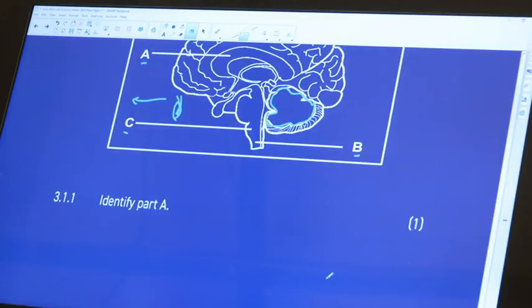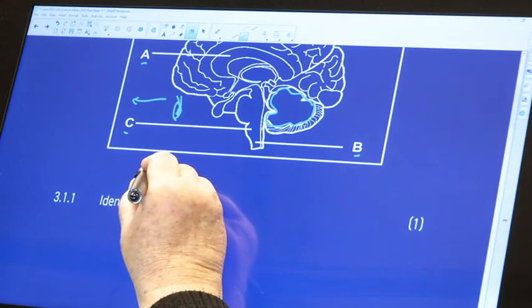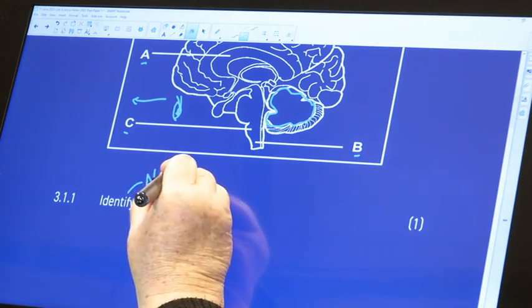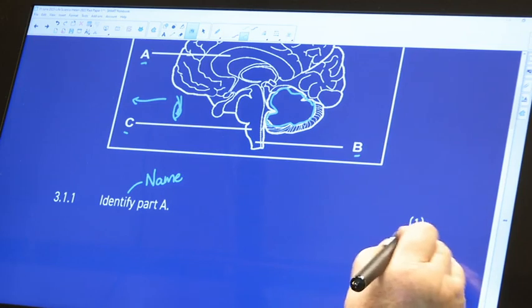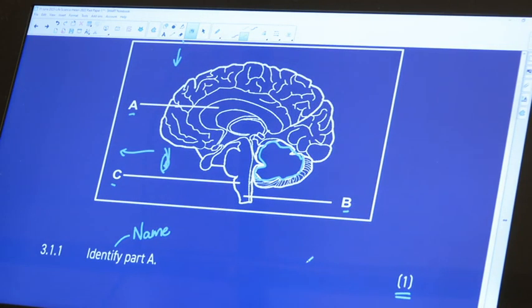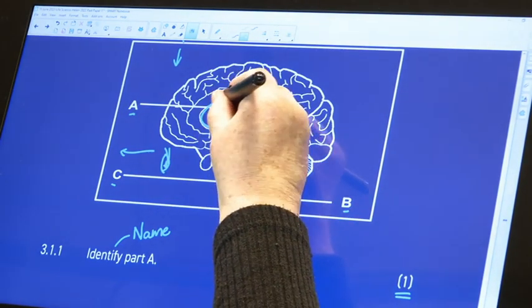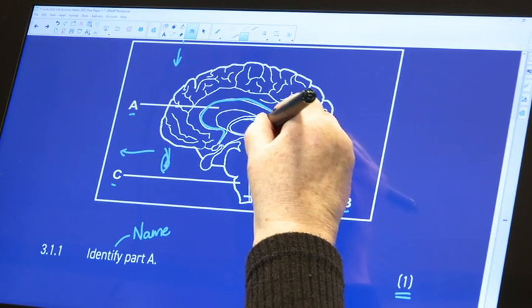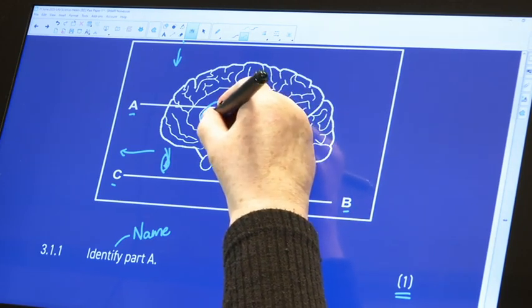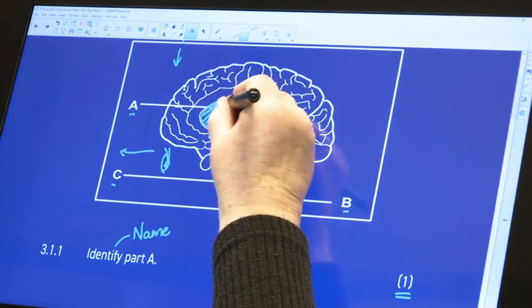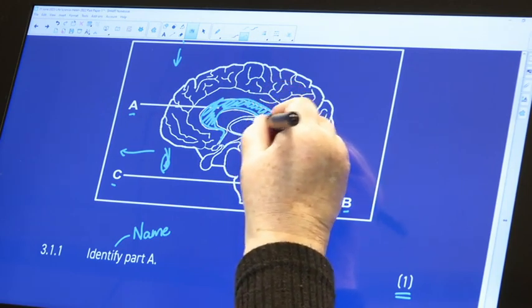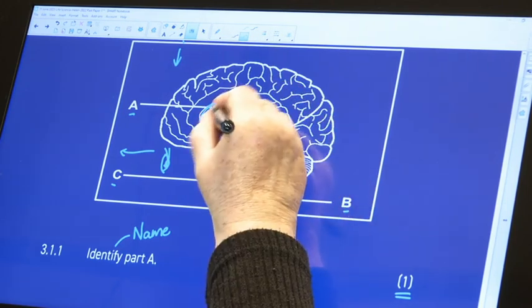Now that we know what we're looking at, let's start with the questions. 3.1.1 says identify part A. Remember where we see the word identify, we just want a name. It is only out of one mark, so we don't have to explain or discuss anything, we just have to identify.